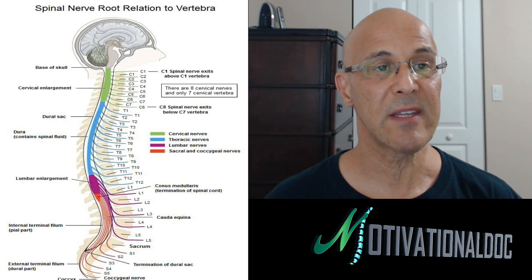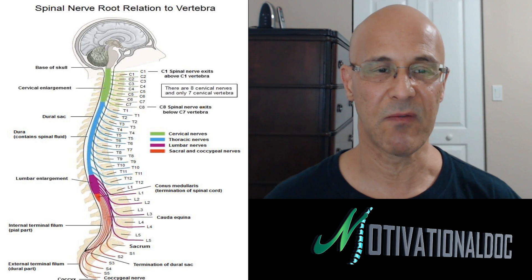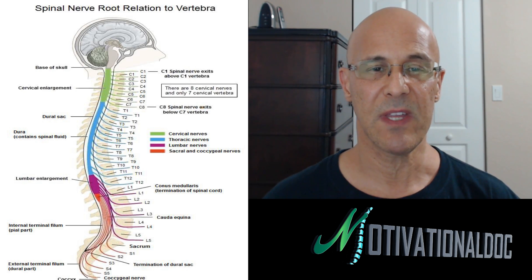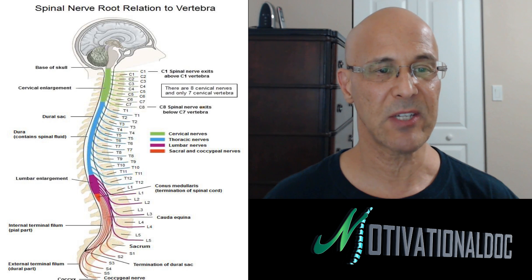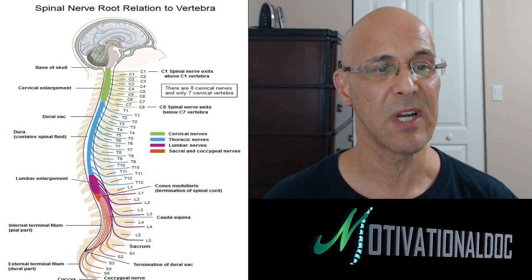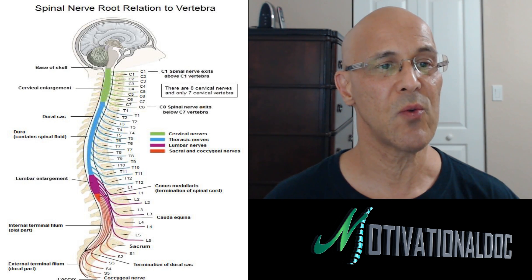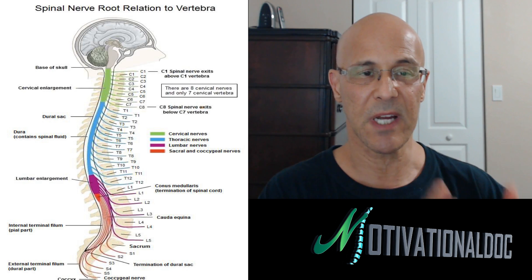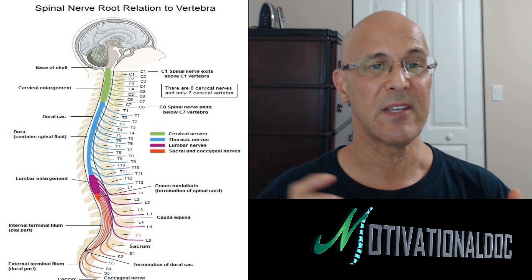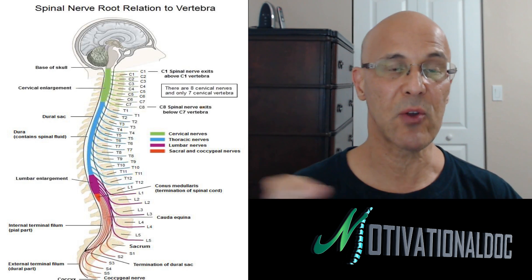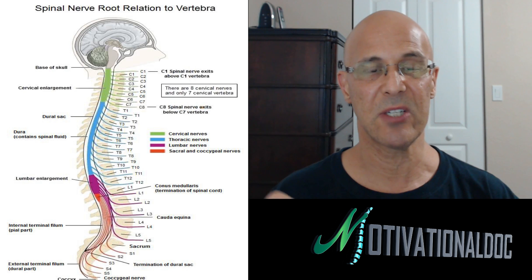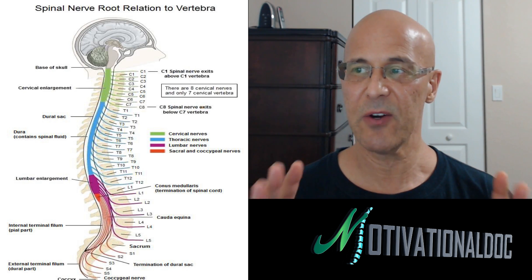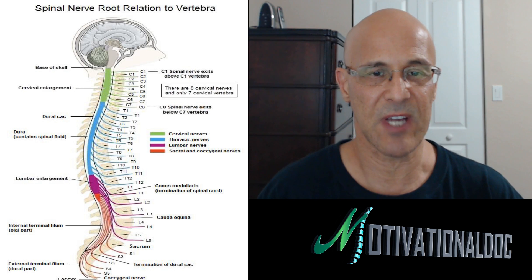If you look at the spinal nerve relationship to the vertebrae, that just shows you the complexity of the vertebrae — a little picture showing you that there is a dura there. The dura covers the whole entire spine, showing you the different spinal nerve roots in relationship to the vertebrae.